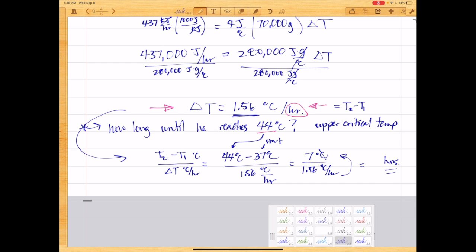so this is our upper critical temperature here, we assume that he started at 37, and then we're trying to figure out how long it takes to span this 1.56 degrees Celsius per hour. So this is 7 degrees Celsius. So the body temperature has to change by 7 degrees Celsius, and it's doing so at a rate of about 1.5 per hour. So if we divide 7 by 1.56,